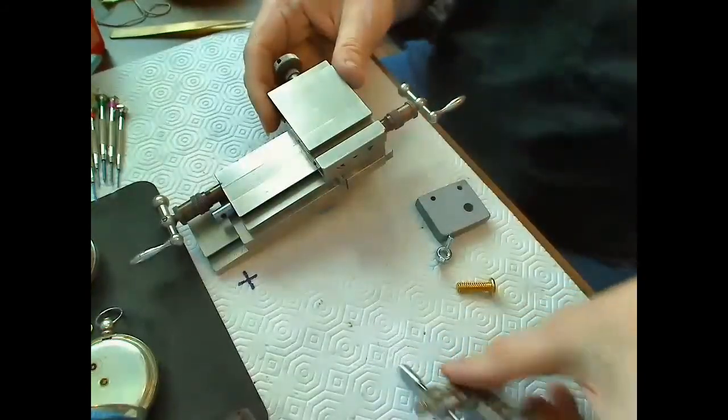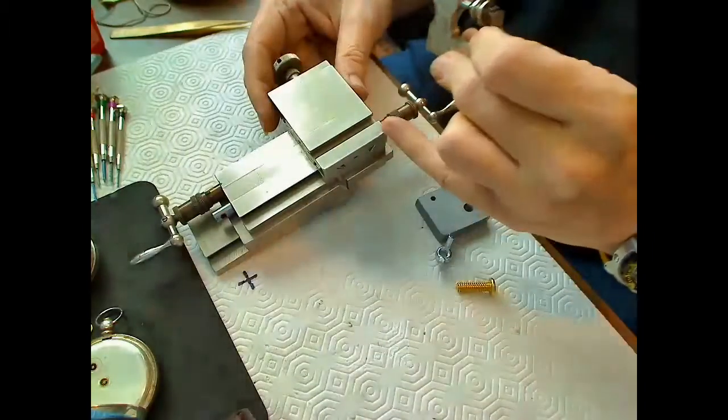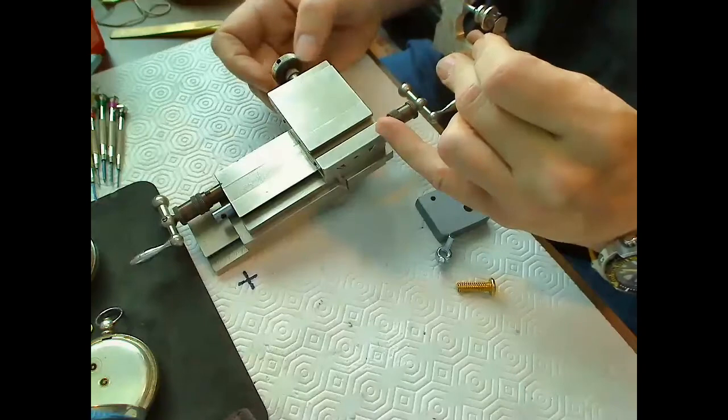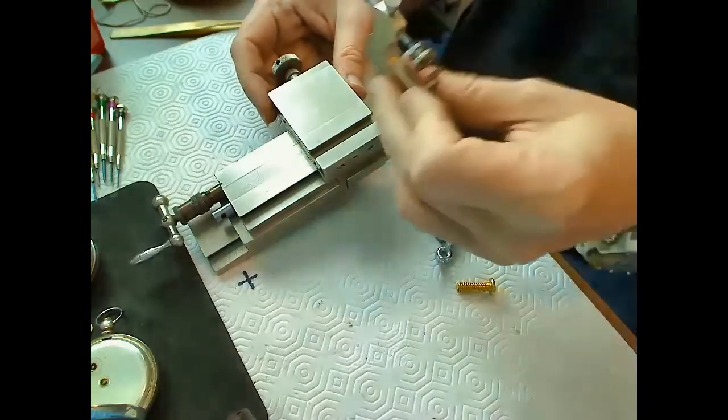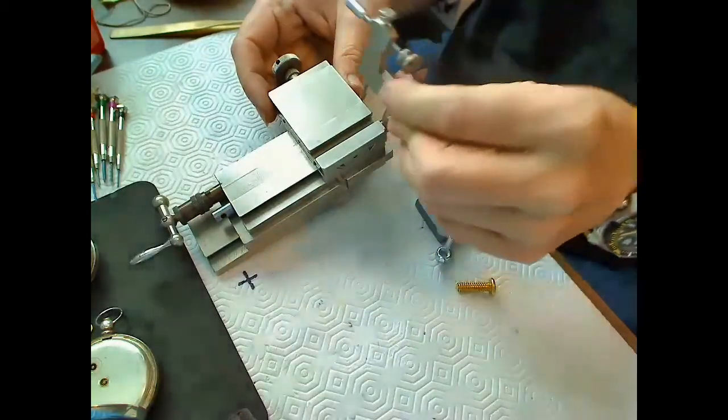In this video I want to explain how I attach this pivot polisher to this cross slide. This is the cross slide for my Bolli lathe. It's got a T-slot here and this has got two pegs in the bottom, and you've got to be able to attach this somehow.